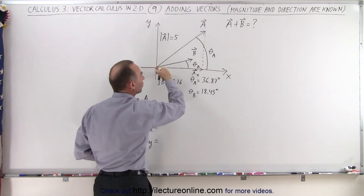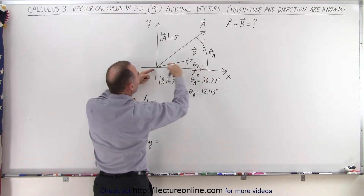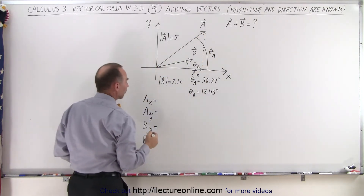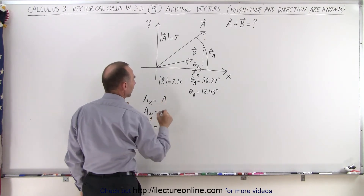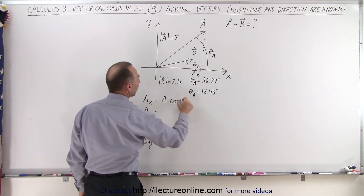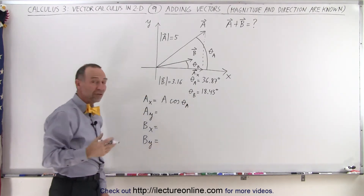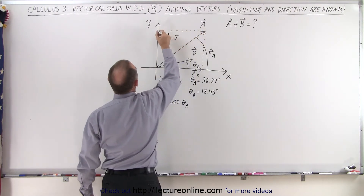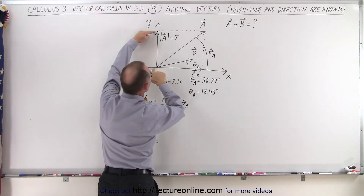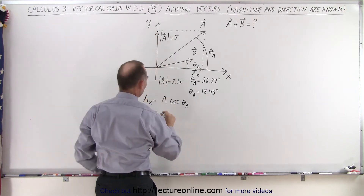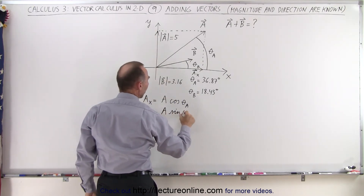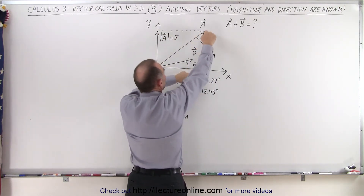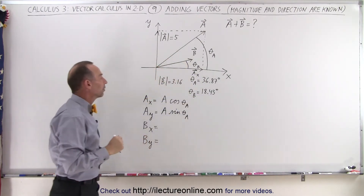When you look at that triangle, you can see that the magnitude of this component is simply the magnitude of vector a times the cosine of the angle theta sub a. So this becomes the magnitude of vector a times the cosine of theta sub a. In the same fashion, if we want to find the y component, we project the vector onto the y-axis. This becomes the y component of vector a, and the magnitude of that would simply be a times the sine of theta sub a, because this component would be the opposite side to the angle theta sub a.